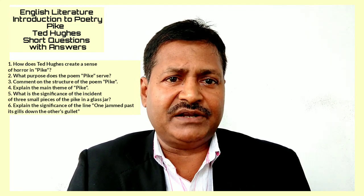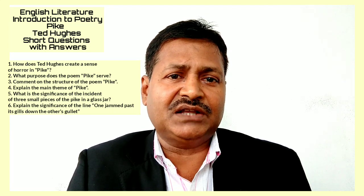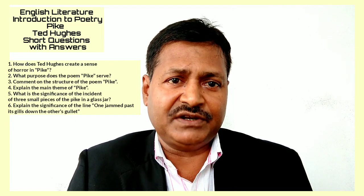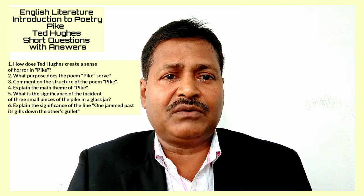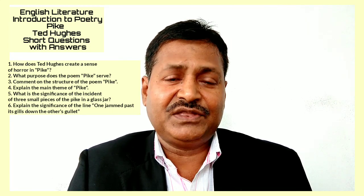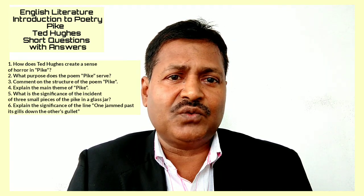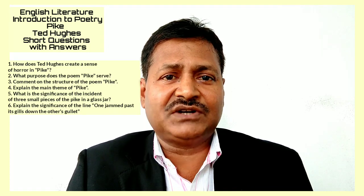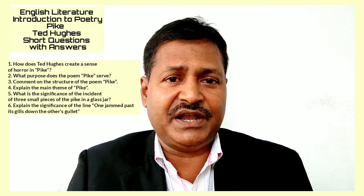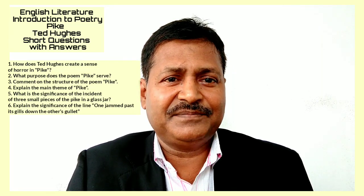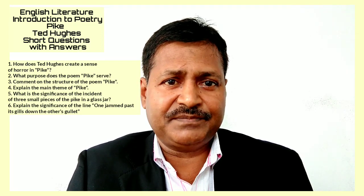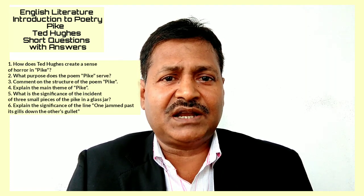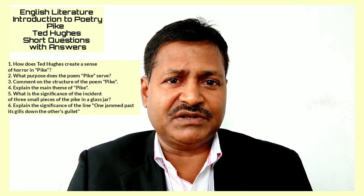Question 6: Explain the significance of the line 'One jumped past its gills, down the other's gullet' in the context of the poem. This is the line of the second anecdote in the poem, very significant in highlighting the main theme. The speaker once found in the willow herb two of the species — dead and dry, each over two feet long and six pounds in weight. Evidently, one tried to gulp down the other but failed, and as a result both died. This incident explains the cannibalistic nature of the pike: it is born with malevolent grain and nothing has changed its inherent killing nature — it spares nobody. Thus, the fittest survives at the cost of the others, illustrating the theme of survival of the fittest.